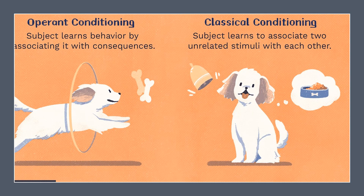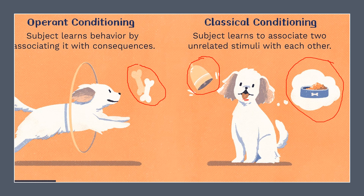In a nutshell, operant conditioning is whereby the subject learns behavior by associating it with its consequences — for example, a dog learns to jump over a ring to get a treat, and after doing that several times, it learns to repeat the behavior. Whereas in classical conditioning, the subject learns to associate two unrelated stimuli with each other — in this case the bell sound and the food — to produce the same result, which is salivation.